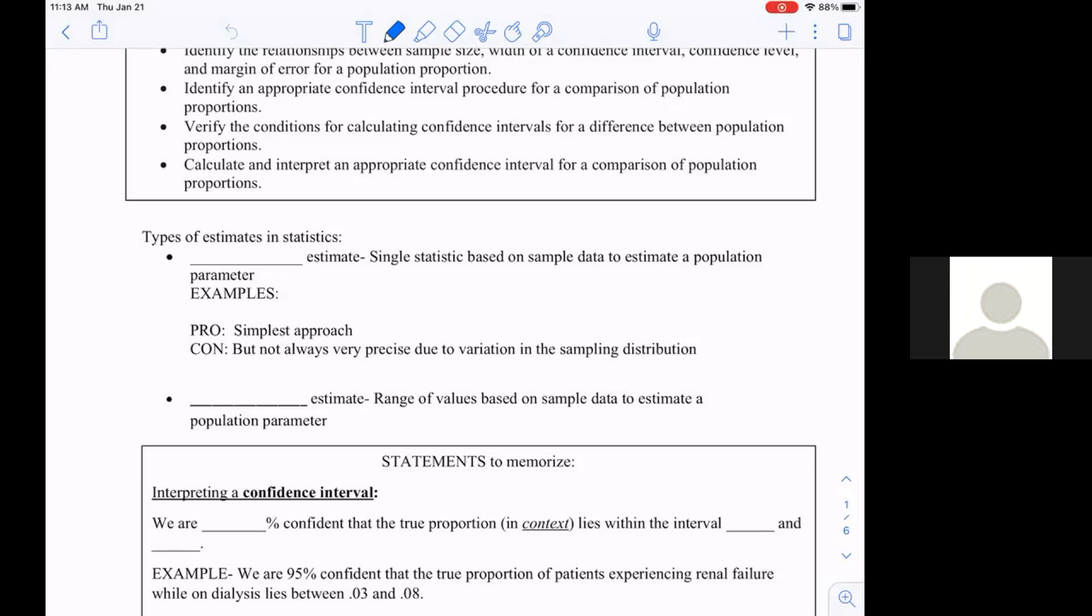That gives us an interval where we would feel confident. When you see a poll, they give you a margin of error. Trump's final approval rating was 42, 41, with a margin of error of three. That means it could have been anywhere from 44 to 38. That's the process we're starting with, creating a confidence interval for estimating a known value.